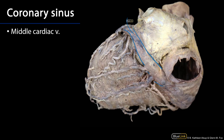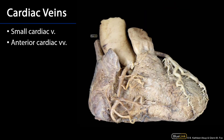In the posterior interventricular sulcus, which we can see coming up here, we have a middle cardiac vein. The great cardiac vein comes around there, the middle comes around there. The small cardiac vein is going to be in association with the right marginal branch.